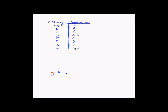Now let us see which activities are dependent on A. We have B and C which are dependent on activity A. So let us now draw B and C. This is the ending node for activity A, and from this node we will have activities B and C emerging. So we have completed B and C.